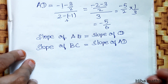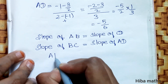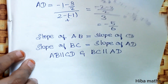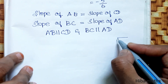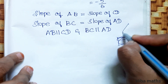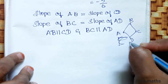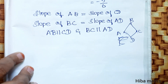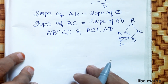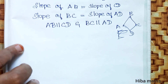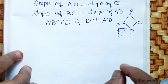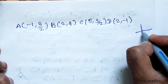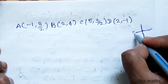Slope of AB equals slope of CD, so AB is parallel to CD. Slope of BC equals slope of AD, so BC is parallel to AD. Opposite sides are parallel. Also the midpoint of AC equals the midpoint of BD, so the diagonals bisect each other.